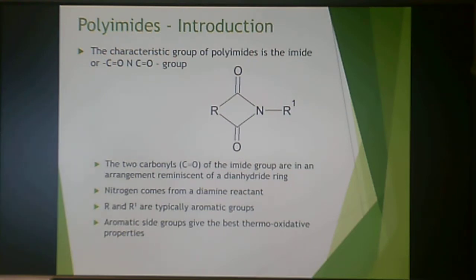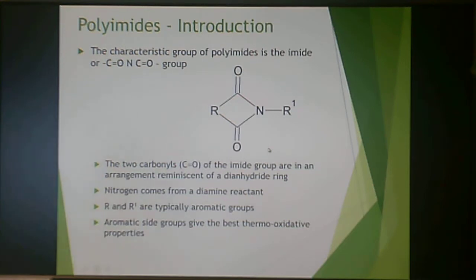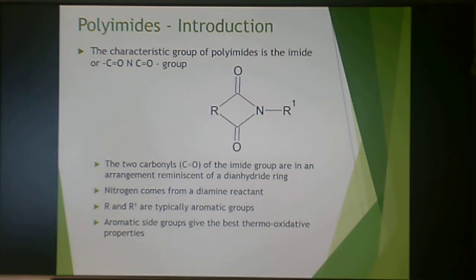This is an imide group. R is just a generic group — could be anything on either side — but this nitrogen attached to a carbon that is double bonded is the characteristic imide group. Two carbonyls in arrangement, kind of like a dianhydride ring, and the nitrogen comes from a diamine reactant. Typically in polyimides, your R and R' are aromatic groups, and that's what gives it the high temperature properties and the high thermal oxidative stability.